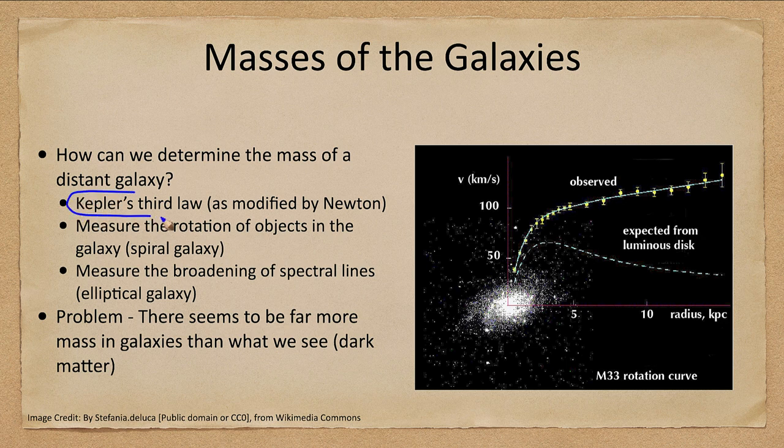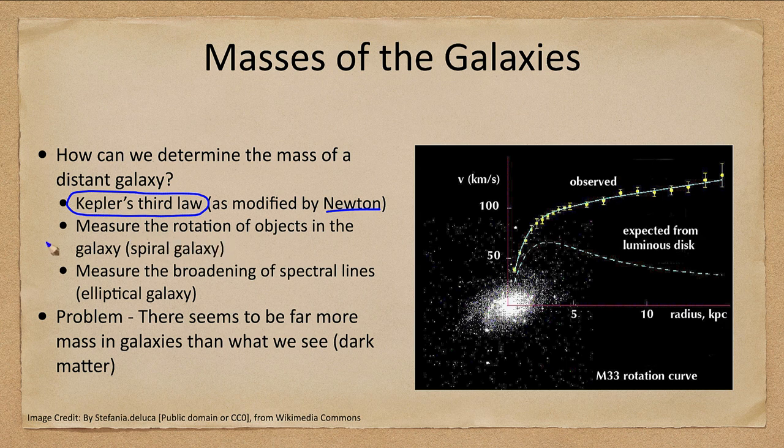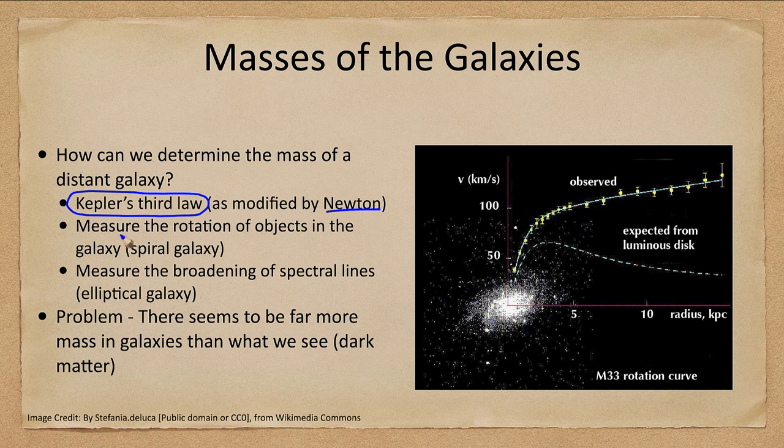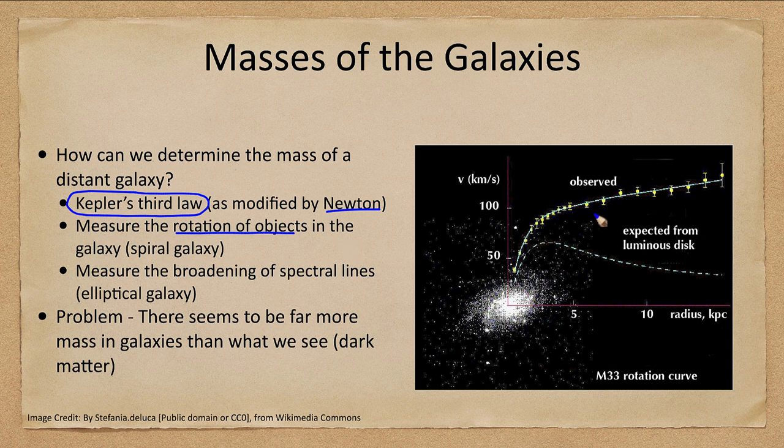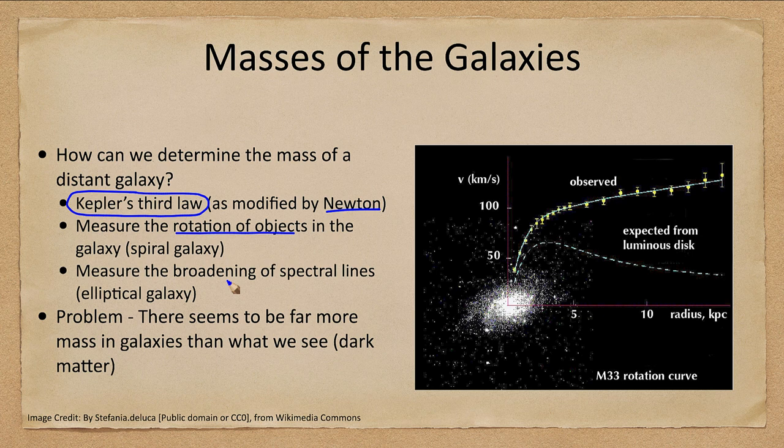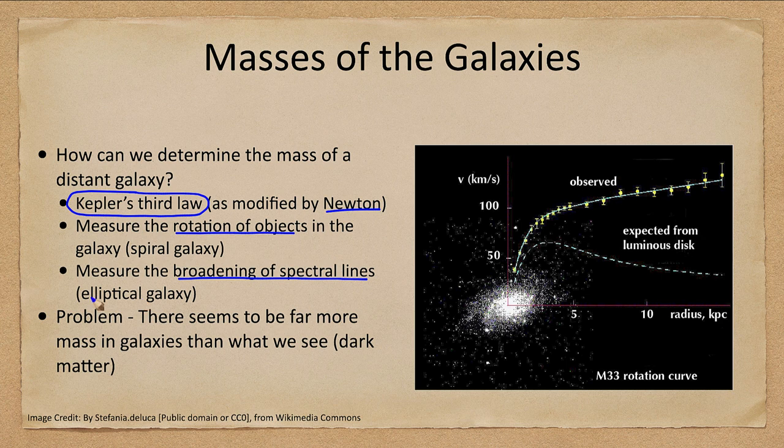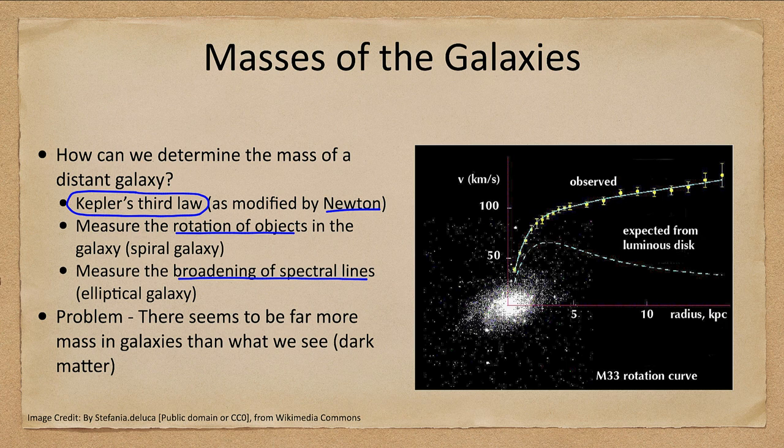That is done from Kepler's third law as modified by Isaac Newton, where we measure the rotation of objects in the galaxy. We can look at two different things: the rotation of objects such as stars in the galaxy, as we see here for a rotation curve for a spiral galaxy, or we can look at the broadening of spectral lines for an elliptical galaxy. Remember, elliptical galaxies don't have quite the coherent rotation that a spiral galaxy does.